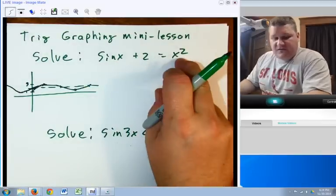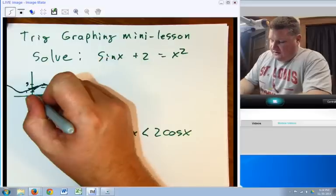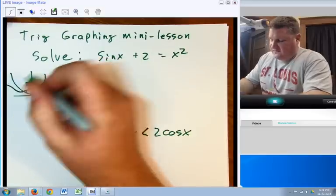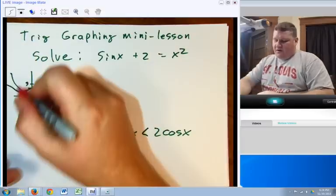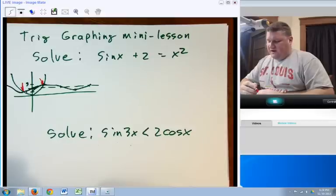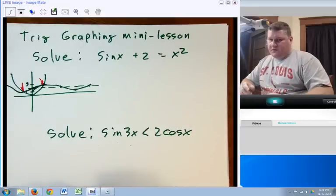Now, on the other side, we have x squared. Well, x squared is a parabola. The problem is exactly where they cross becomes somewhat problematic. So I need to figure out where they cross, but I'm not entirely sure.